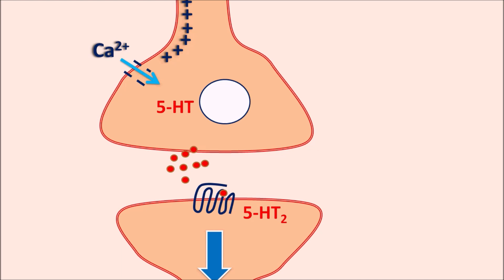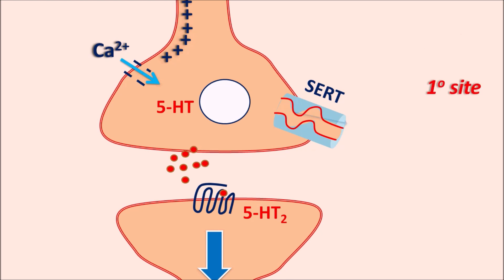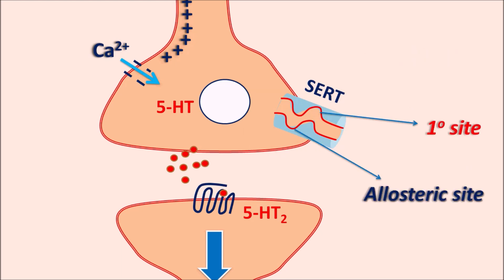The released 5-HT can also be taken back into the nerve terminals by the serotonin reuptake transporter (SERT). This transporter has two important sites: a primary site and an allosteric site. The 5-HT can be reuptaken through SERT via the primary as well as allosteric sites. In this way, the released 5-HT can act on postsynaptic receptors but at the same time can be reuptaken into the nerve terminal and stored back into vesicles.